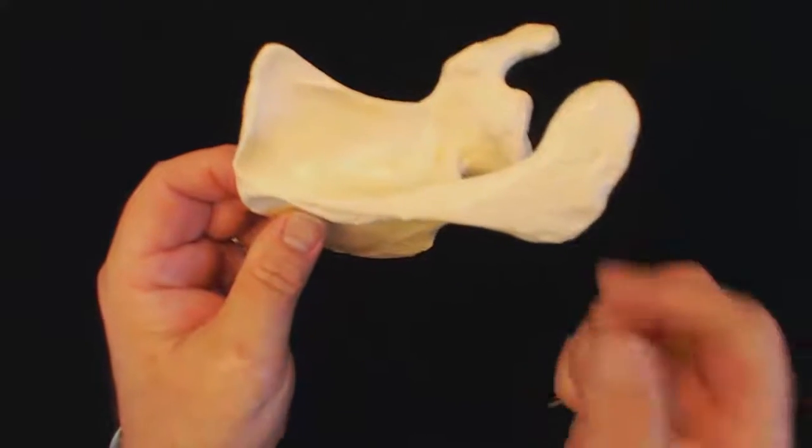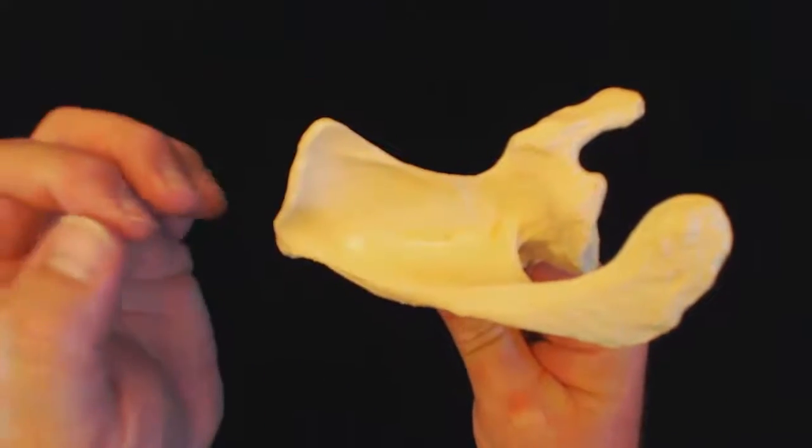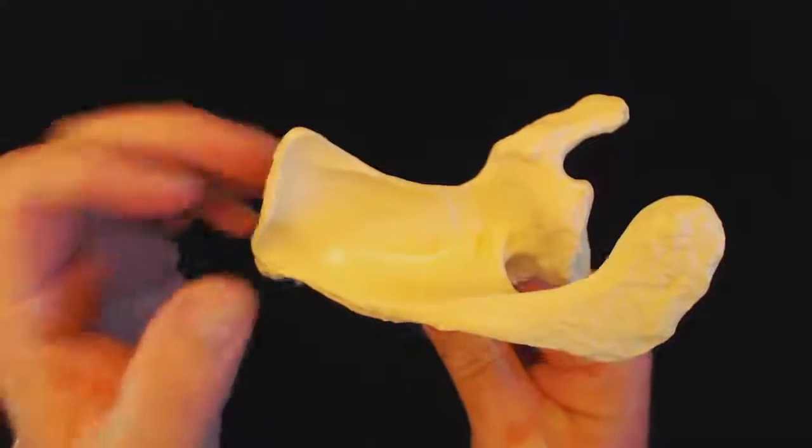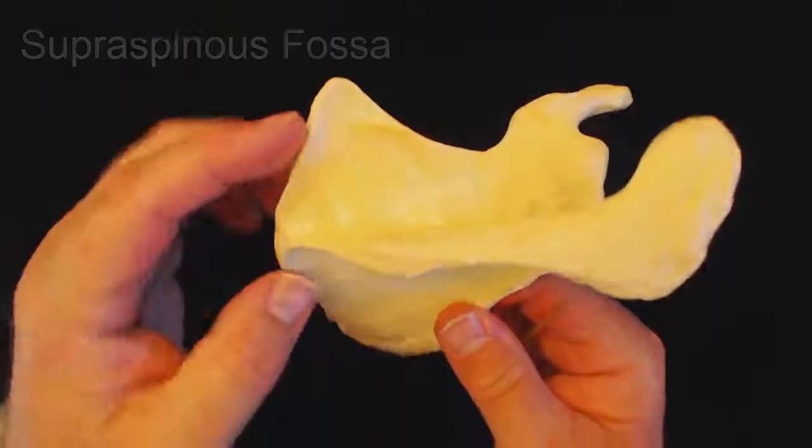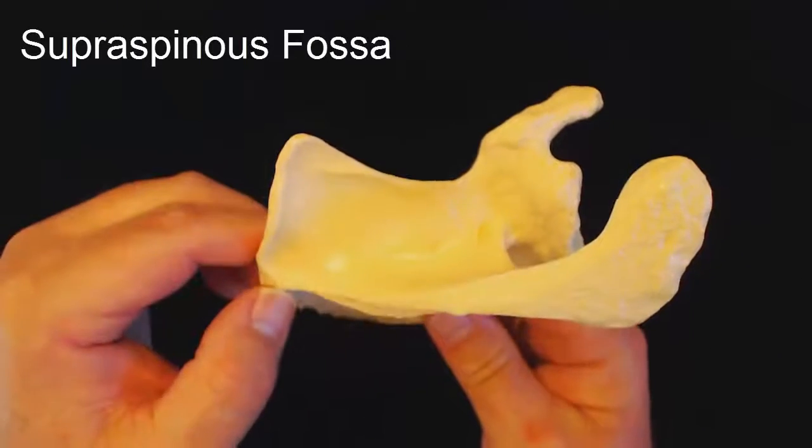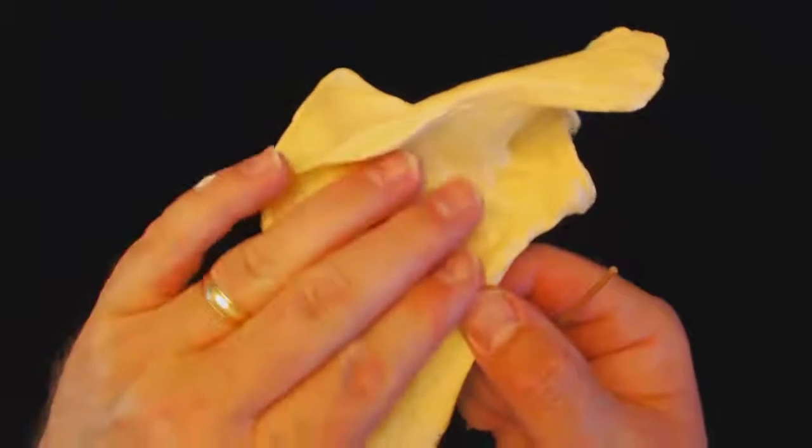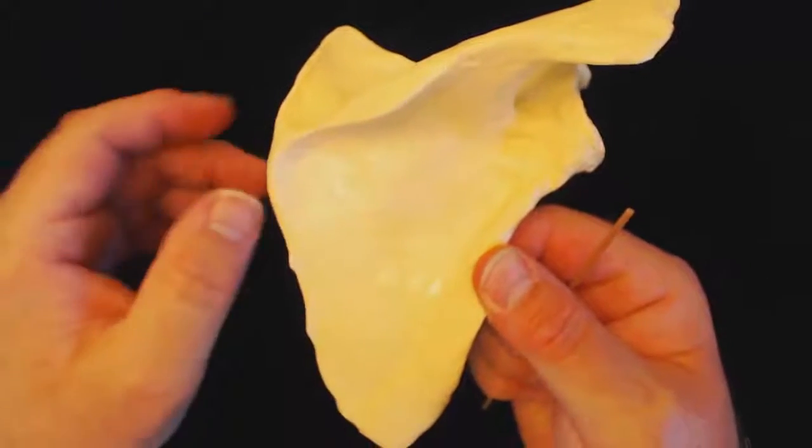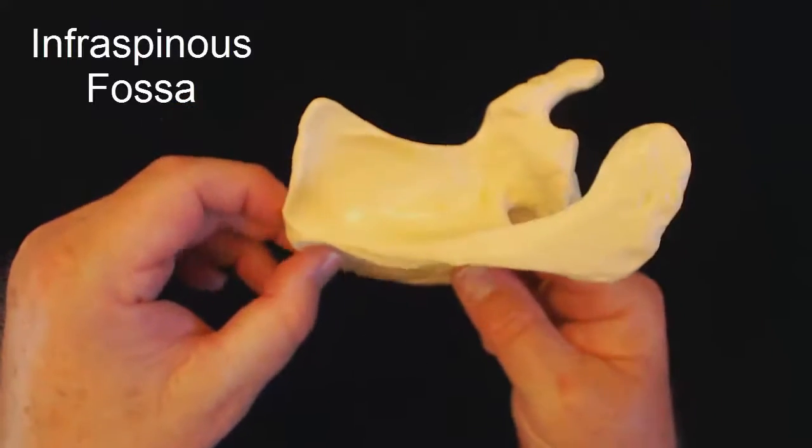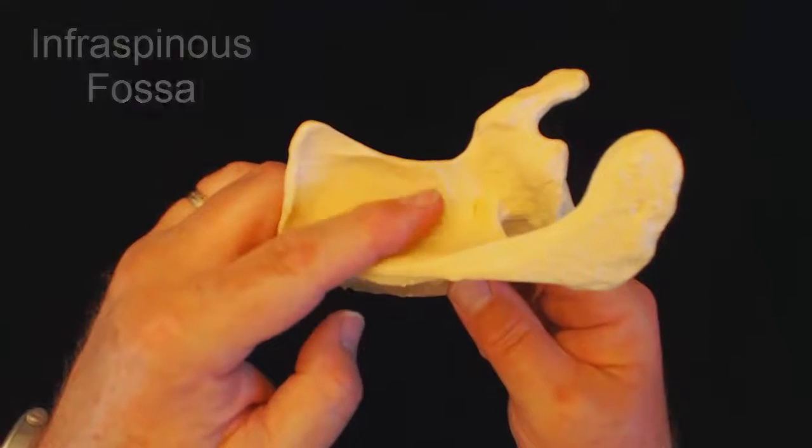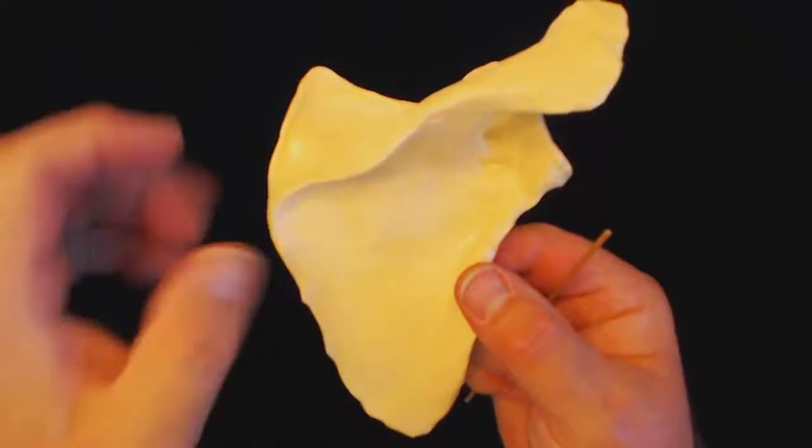Now, above that spine, we have this indented area here. And we call a big indention a fossa. So since that is above the spine, we're going to call it the supraspinous fossa. And then below that is another big indentation. And we're going to call that the infraspinous fossa. And what lives there is going to be the supraspinatus muscle for the supraspinous fossa and the infraspinatus muscle for the infraspinous fossa.